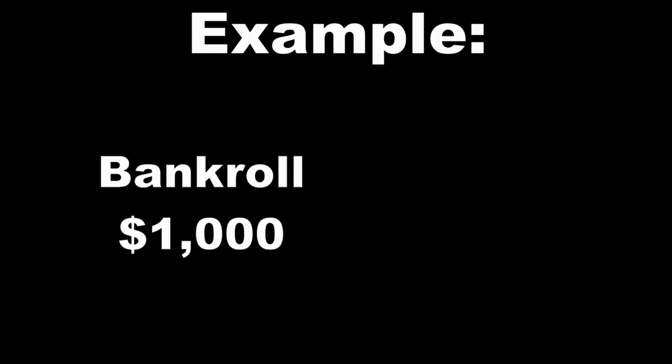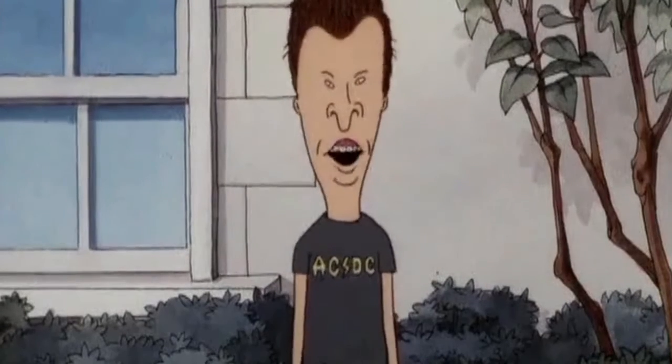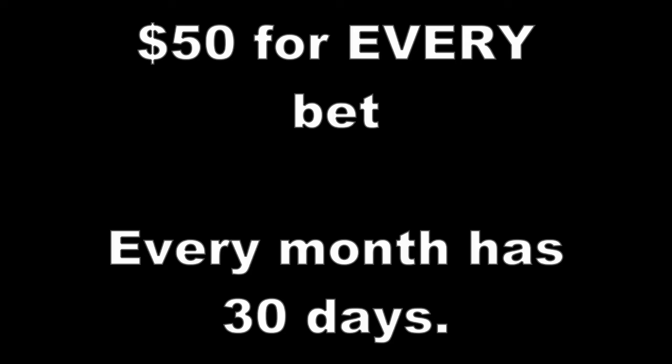Now, let me show you what this success will look like. Just for example, let's say that I have $1,000 in my bankroll. Since I'm limiting my bets to 5% of this bankroll, that means that I'm betting $50 every time. Now, as your bankroll increases and decreases, the amount that you're betting — which is called your unit size — should be adjusting according to this new bankroll amount. I'll talk about when I like to make this adjustment later in the video, but for the sake of making the math easier for this example, let's keep it at $50 for every bet, and let's say that every month has 30 days.